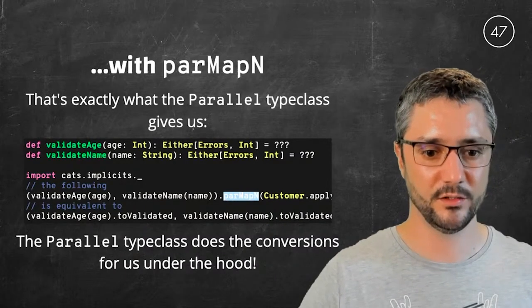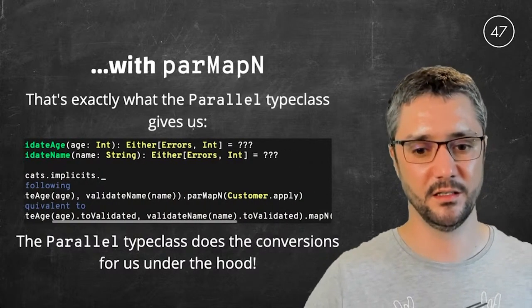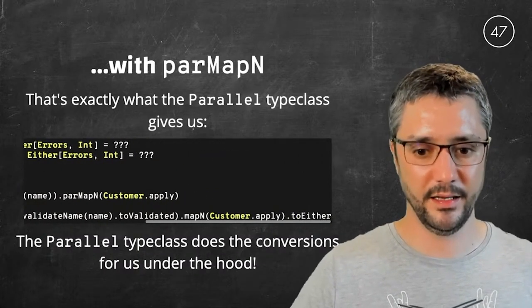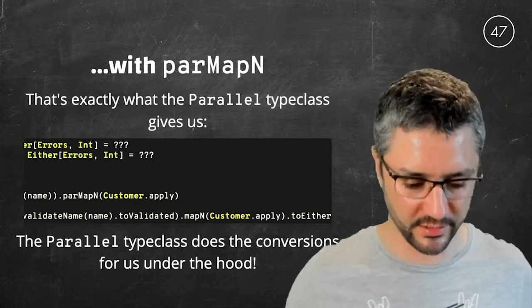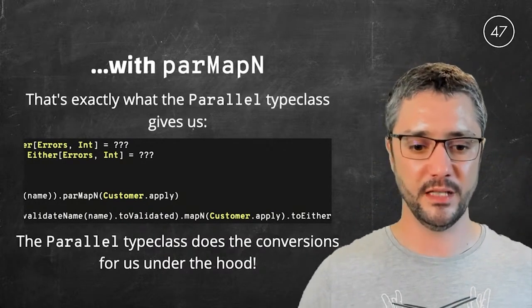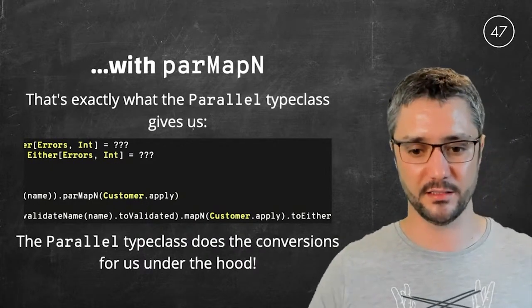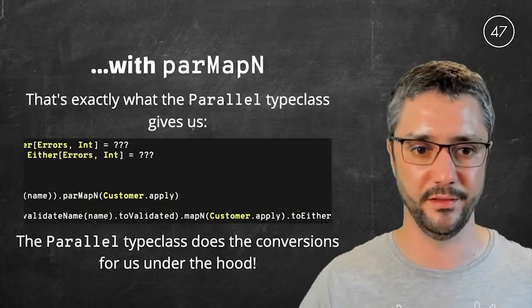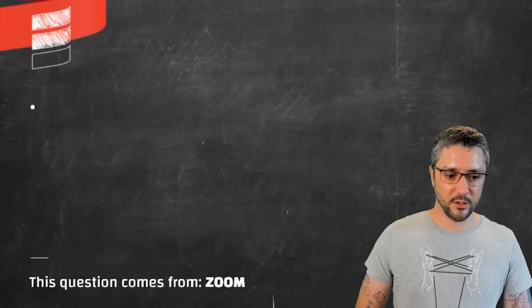Without parMapN, the equivalent will be to say, validate the age, transform it to validated. Same for the name. So now you can use mapN. And finally, you have to transform the result to either. So that's a nice trick. You could use that, and you would never have to mention validated. It will be used under the hood. But you can write everything against either, and still have error accumulation and independent validations. So that's it.